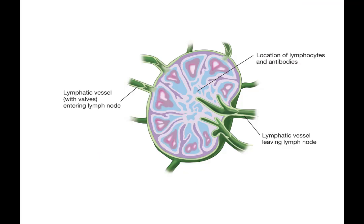Lymphatic vessels have a series of lymph nodes interspersed throughout the system. Lymphatic fluid comes into these lymph nodes, passes through the center, and exits on the other side. Within the lymph node are components of our immune system that can identify and remove any potentially harmful antigens traveling through the lymph.